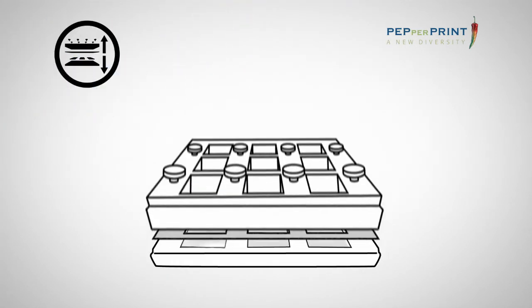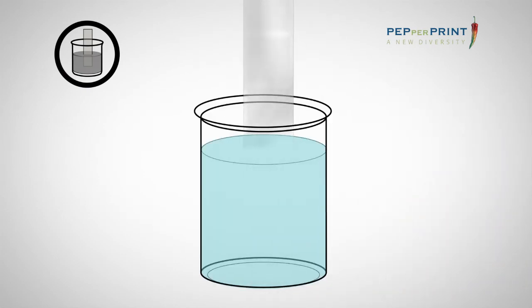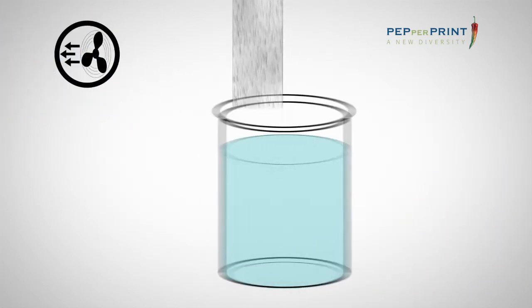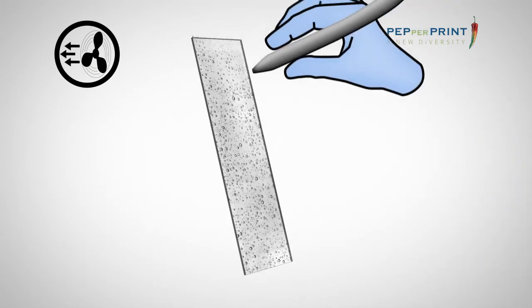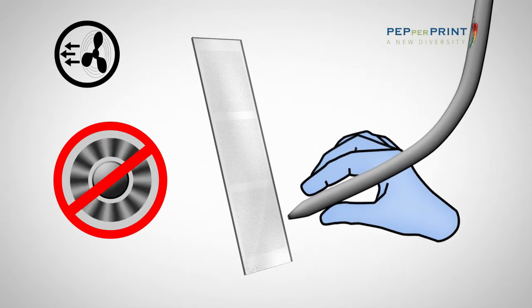Dismount the incubation tray and remove the PepperChip Peptide MicroArrays carefully from the tray. Dip the slide into deionized water to remove residual washing buffer. Dry the slide in a stream of air or inert gas by blowing off water droplets from top to bottom. The use of centrifuges for drying is not recommended.